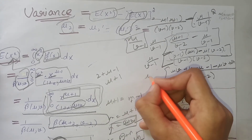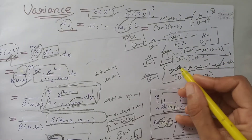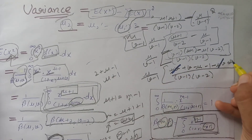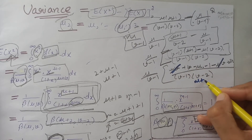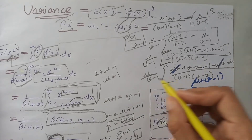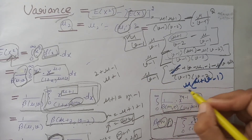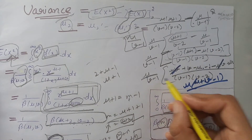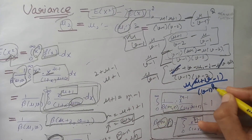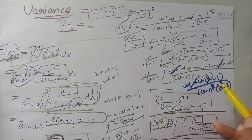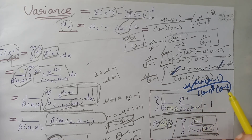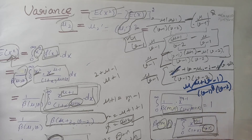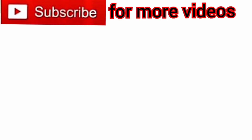The uv terms cancel, and combining u terms gives +u, leaving u plus v minus 1 in the numerator. With u/(v-1) outside and (v-1)(v-2) in the denominator, the variance of the beta distribution of the second kind equals u(u + v - 1) divided by (v-1)² times (v-2).